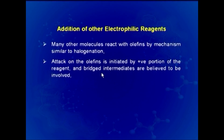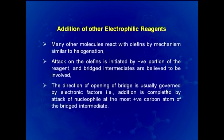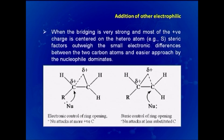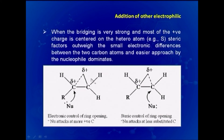Many molecules react with olefins by mechanisms similar to halogenation. Attack is initiated by the positive portion of the reagent, and bridged intermediates are involved. The direction of opening of the bridge is governed by electronic factors — the nucleophile attacks at the most positive carbon. When bridging is strong and positive charge is centered on the heteroatom (e.g., sulfur), steric factors outweigh small electronic differences and the nucleophile attacks the less hindered, less substituted side.